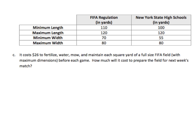This one is an awful lot like the first problem. It costs $26 to fertilize, water, mow, and maintain each square yard — so one unit is $26. Of a full-size field with the maximum dimensions, how much will it cost to prepare the field for next week's match? We have to find the maximum area, so we look at the maximum length and maximum width for FIFA. Since it's area, we multiply to get the number of units, then use that the same way we did in problem one.